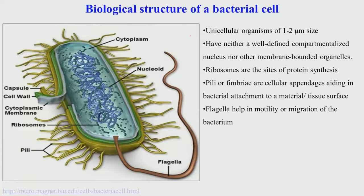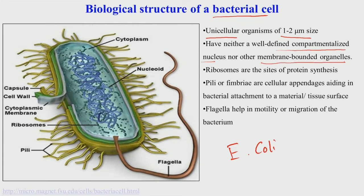This slide shows the more widely known bacterium E. coli, Escherichia coli. It is a unicellular organism — a typical prokaryotic cell with a size of 1 to 2 microns. A fundamental difference between the structure of a bacterial cell and a eukaryotic cell is that the bacterial cell does not have a well-defined compartmentalized nucleus or other membrane-bounded organelles. As a result, the DNA is dispersed throughout the cytoplasm or cytosol. Ribosomes, just like in eukaryotic cells, are also present in bacterial cells and are the site of protein synthesis.